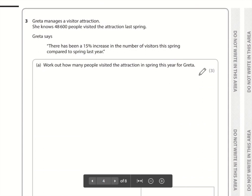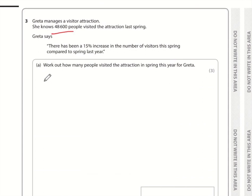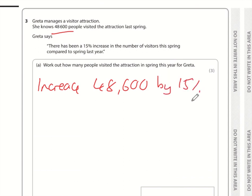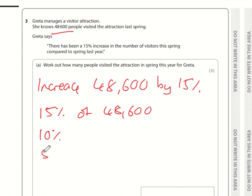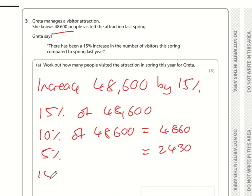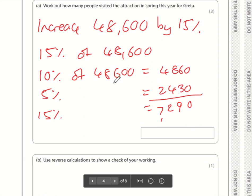Question three: increase 48,600 by 15%. Since I can't use a calculator, I'll split 15% into 10% plus 5%. 10% of 48,600 is 4,860 — just divide by 10. 5% is half of that, which is 2,430. So 15% is 4,860 plus 2,430, which gives 7,290.